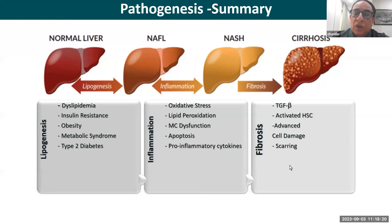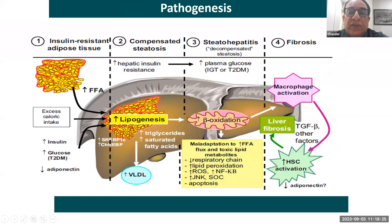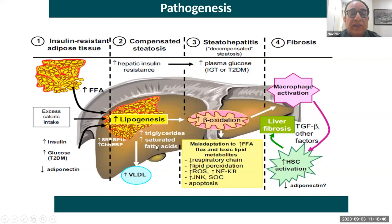The pathogenesis: initially lipogenesis driven by dyslipidemia, insulin resistance — the biggest problem worldwide — obesity, metabolic syndrome, type 2 diabetes leading to lipid deposition. This causes oxidative stress; all the inflammatory pathways are activated, causing inflammation, NASH, fibrosis, and finally cirrhosis. Increased insulin, increased glucose, faulty diet, excessive caloric intake cause hepatic insulin resistance which leads to lipogenesis, increased uric acid and triglycerides, steatohepatitis, plasma glucose increases, apoptosis, macrophage activation, fibrosis, and cirrhosis.